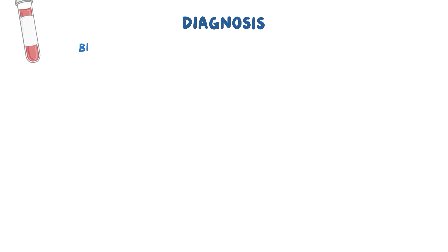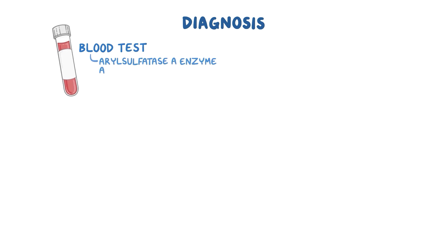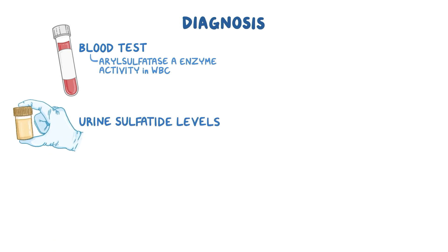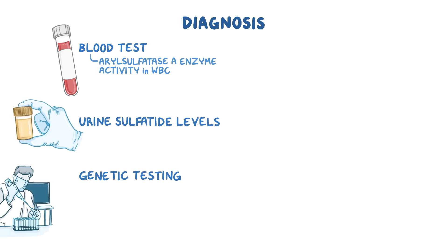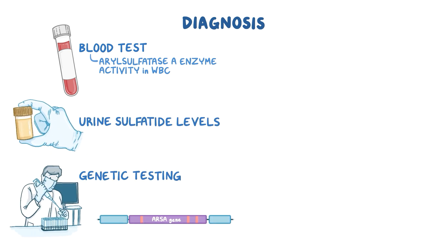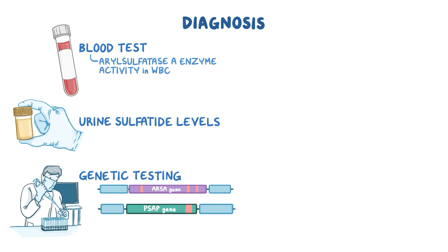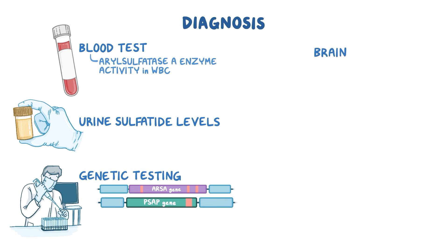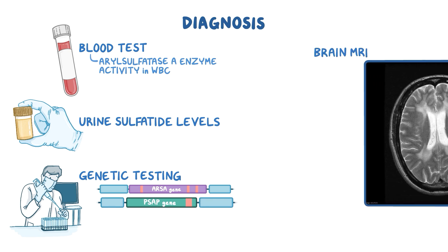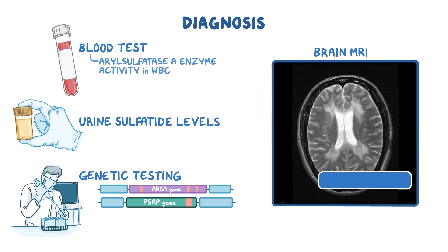Diagnosis includes blood tests to measure arylsulfatase A enzyme activity in white blood cells, measurement of urine sulfatide levels, and genetic testing to evaluate the ARSA and PSAP genes. A brain MRI in a person with MLD shows areas of hyperintensities in the white matter regions, which indicates the loss of myelin.